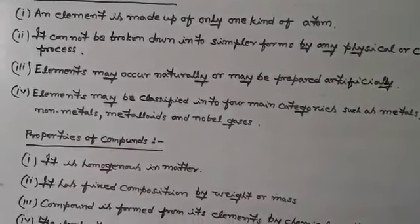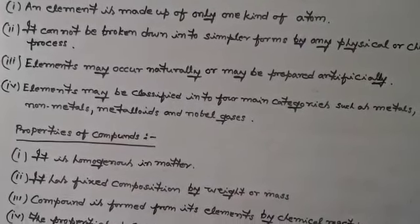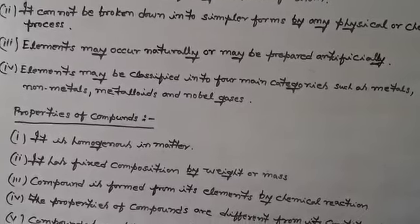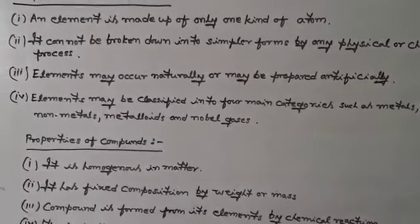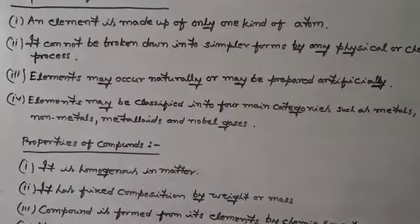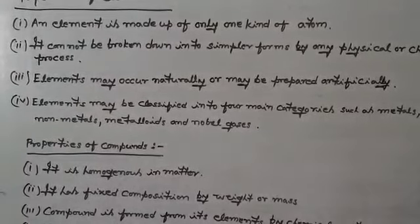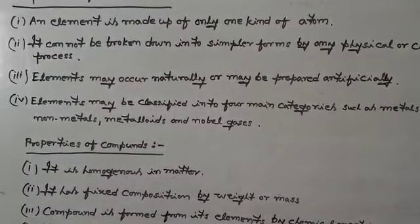The next property: the elements may be classified into four main categories on the basis of their nature: metals, non-metals, metalloids, and noble gases.